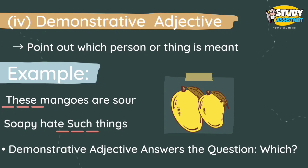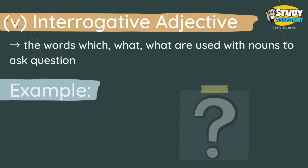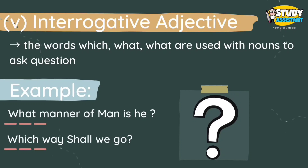Our fourth type is demonstrative adjective. It is used to point out which person or thing is meant. For example, 'These mangoes are sweet' and 'She hates such things.' Demonstrative adjective answers the question 'which?' Our fifth kind is interrogative adjective — when the words 'which,' 'what,' and 'whose' are used with a noun to ask questions, they are called interrogative adjectives.